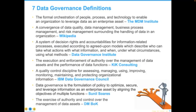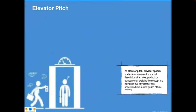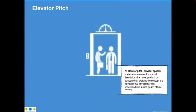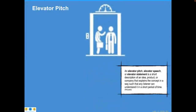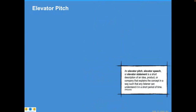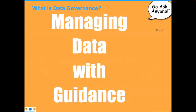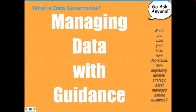Imagine getting on an elevator with an executive who asks you to explain data governance before the ride ends. Those longer definitions wouldn't make sense in that time frame. So I prefer a shorter definition: data governance is managing data with guidance. The appropriate follow-up question is: would you want your sole non-depletable, non-degrading, durable strategic asset managed without guidance? Do you manage any other assets without guidance? The answer is typically no.